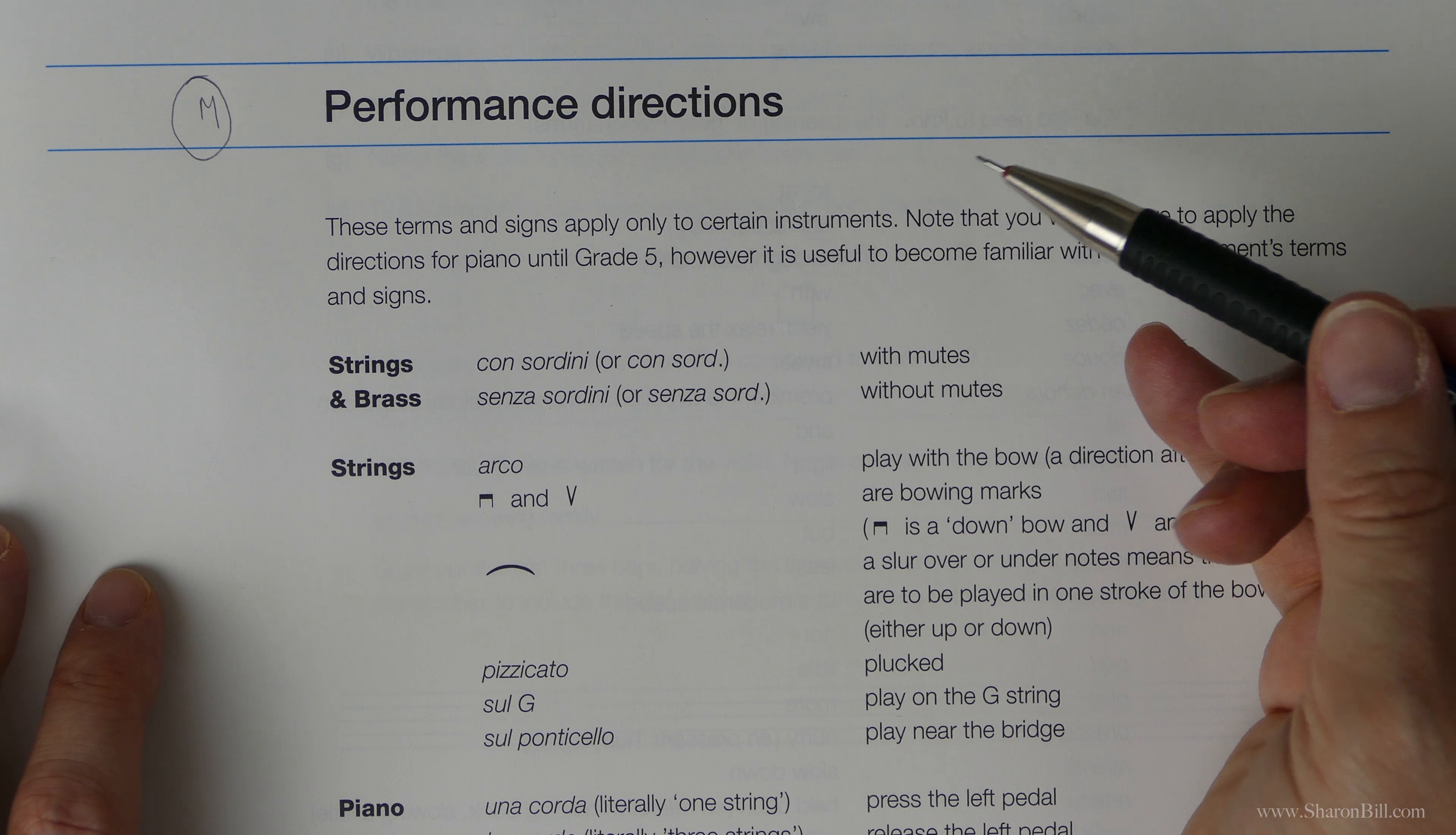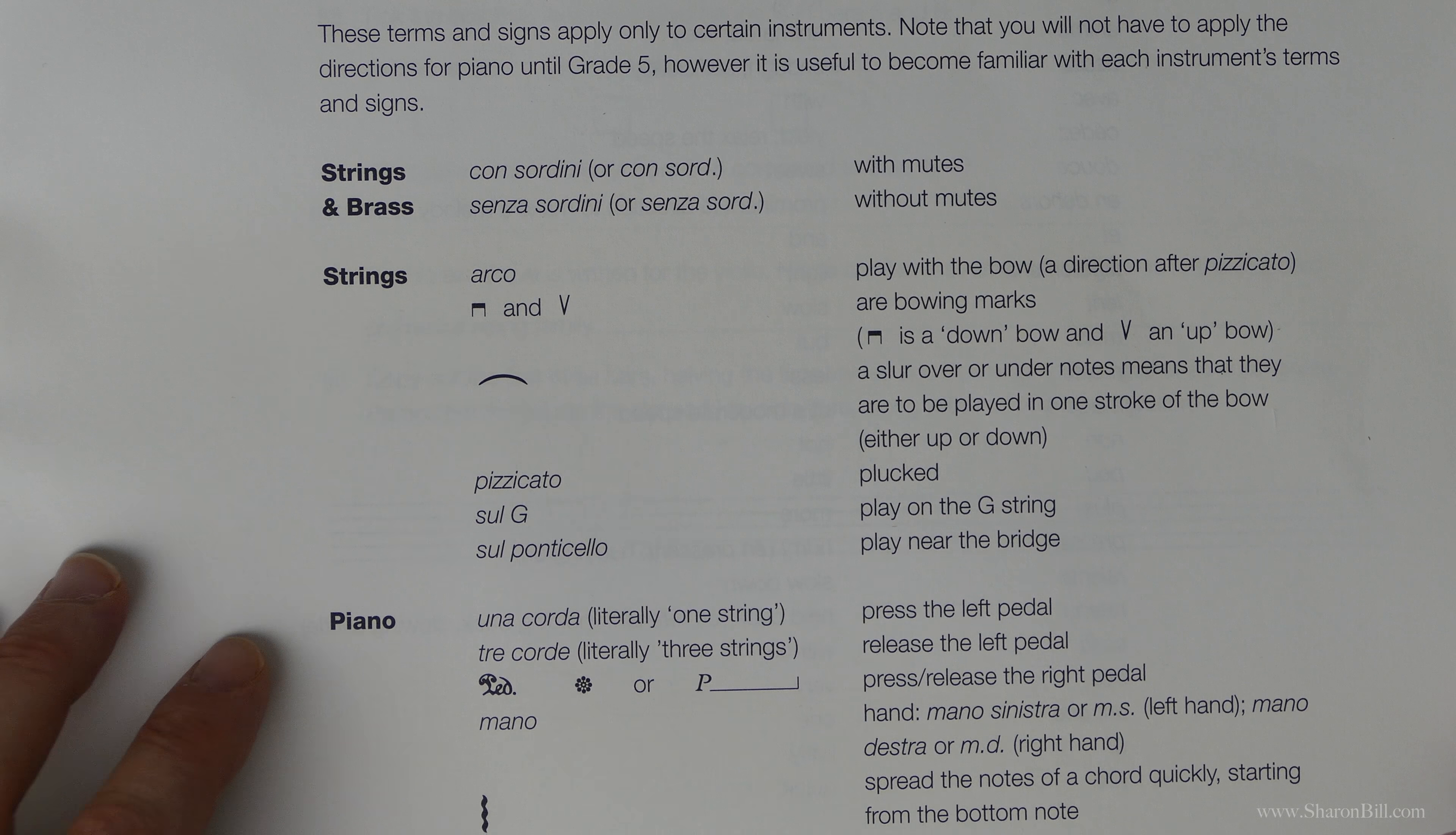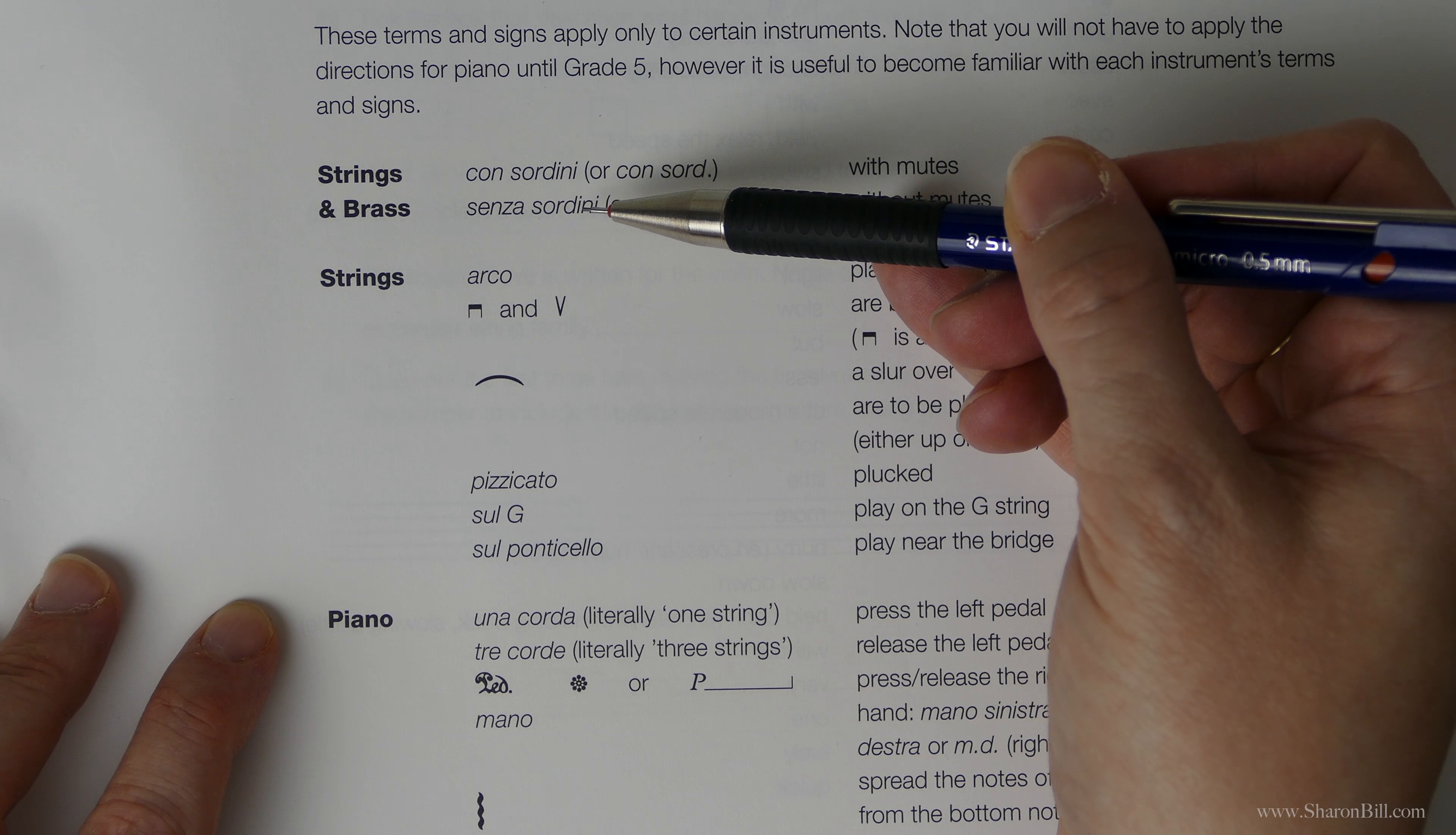It's always drawing on previous knowledge as well. So the new information that we've got are these performance signs relating to the instruments that we've talked about in the previous video. It's things like knowing that brass can have mutes or no mutes and looking at the Italian terms for that.